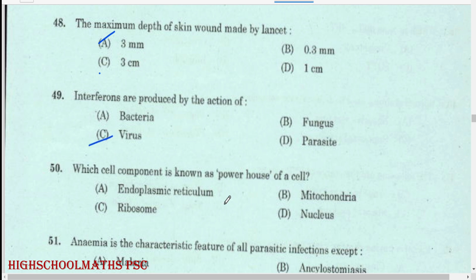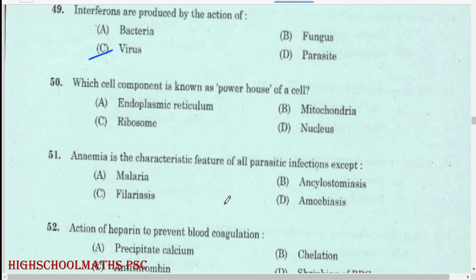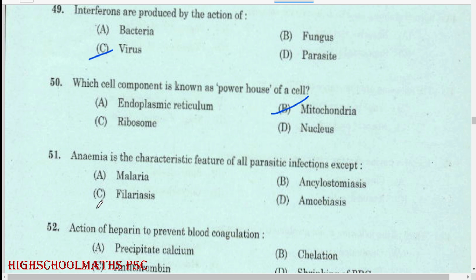Which cell component is known as the powerhouse of the cell? Mitochondria. Anemia is the characteristic feature of all parasitic infections except: filariasis.